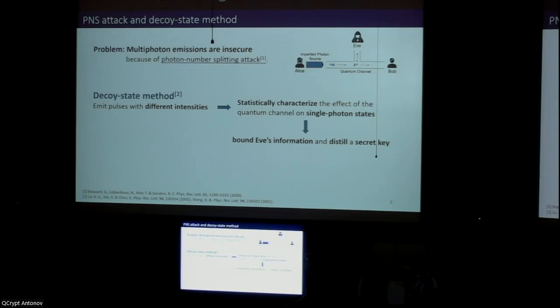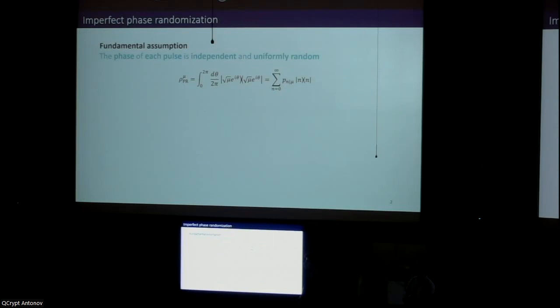The best solution we have today for this problem is known as the decoy state method. The great thing about it is that it allows us to recover essentially the same key rate scaling as with an ideal single photon source. This is why most QKD implementations and commercial systems today rely on this method, especially those that deal with long distances.